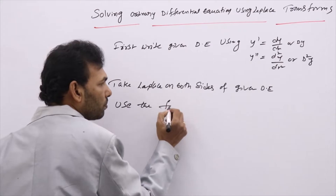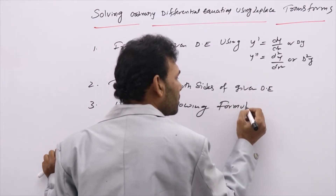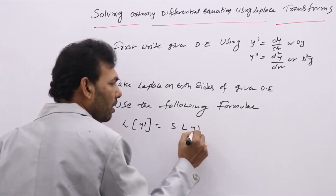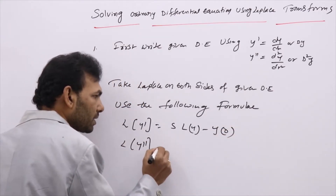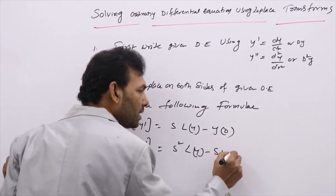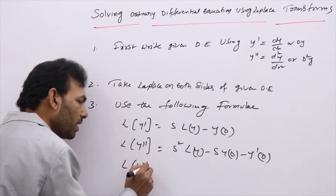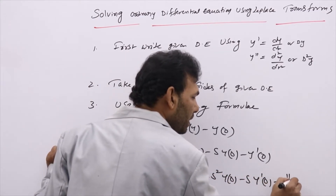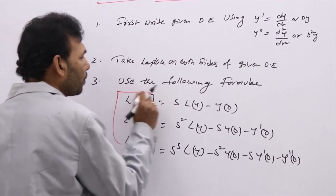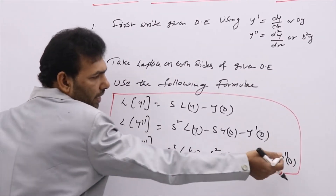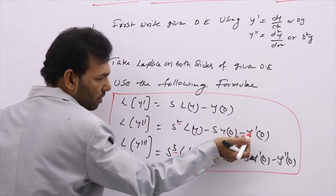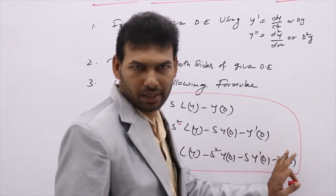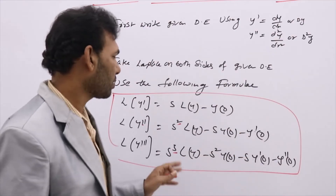Use the following important formulas which you need to remember: L{y'} = S·L{y} − y(0); L{y''} = S²·L{y} − S·y(0) − y'(0); L{y'''} = S³·L{y} − S²·y(0) − S·y'(0) − y''(0). You can identify the pattern: the S power decreases and the y derivative order increases in each successive term.